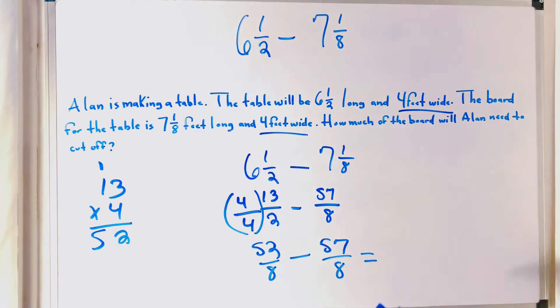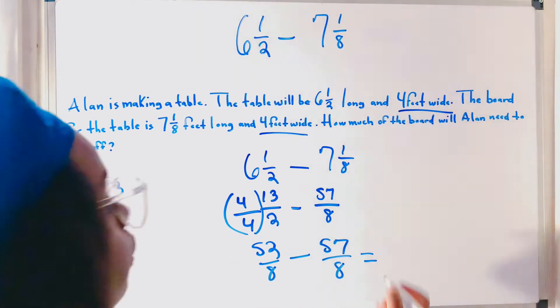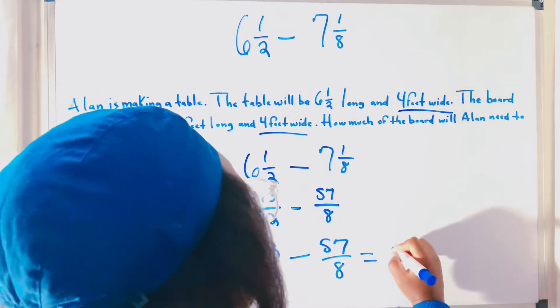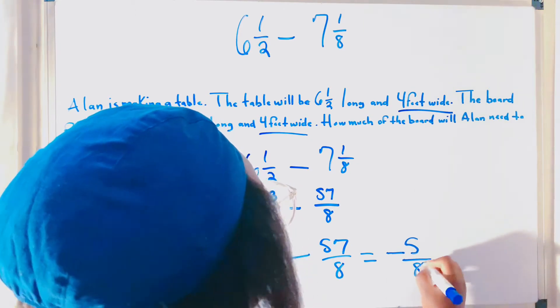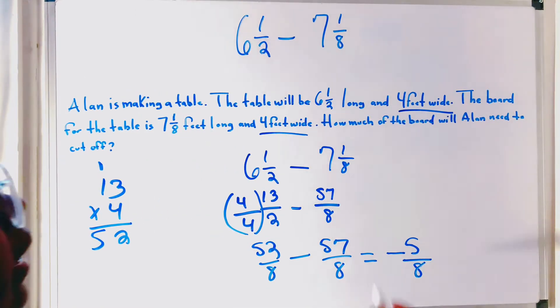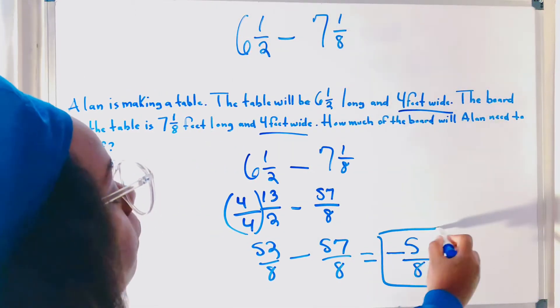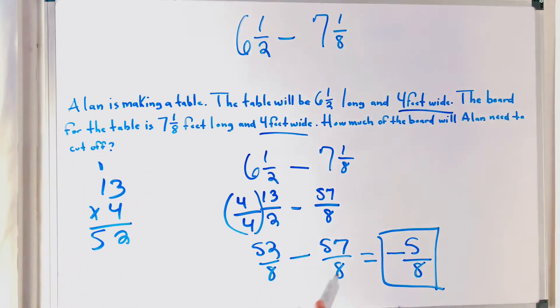Minus 57 over 8. So, 2 minus 7 is going to give us negative 5 over 8. So, that would be the final incorrect answer for this problem. Negative 5 over 8.